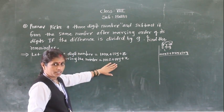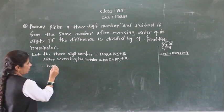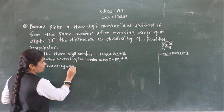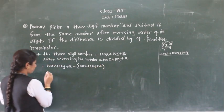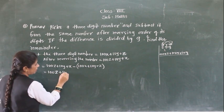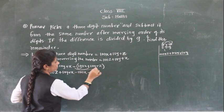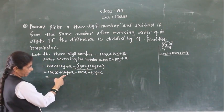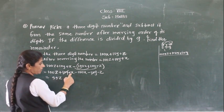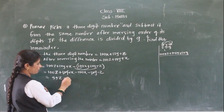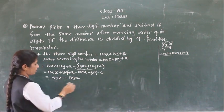This is the number got after reversing the digits. Now Pranam wants to subtract the original from the reversed number. So: 100z plus 10y plus x, minus (100x plus 10y plus z). Simplifying: 100z plus 10y plus x minus 100x minus 10y minus z. The 10y terms cancel. You get 100z minus z = 99z, and x minus 100x = negative 99x.